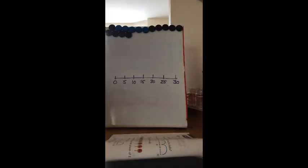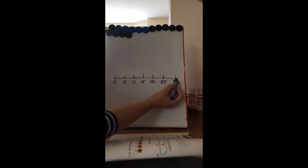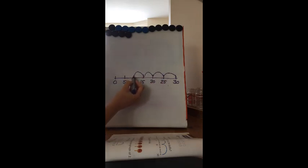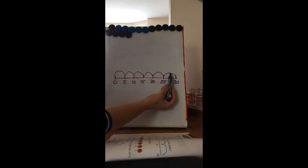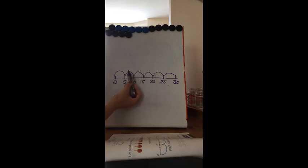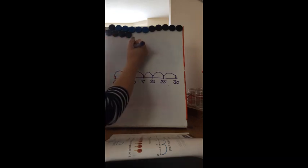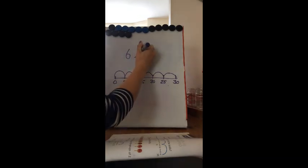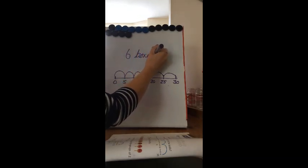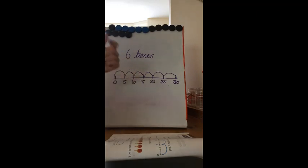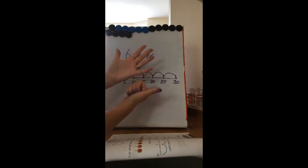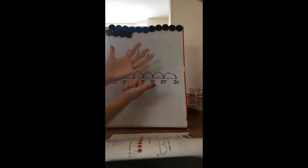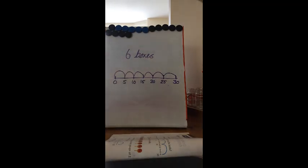I've drawn the number line out on my board. We've got 30 balls and five fit into each box, so we go: five, five, five, five, five, five. How many jumps have I used? One, two, three, four, five, six — so six boxes are needed. Let's double-check: 5, 10, 15, 20, 25, 30. We got up to 30 balls and there are six boxes needed.